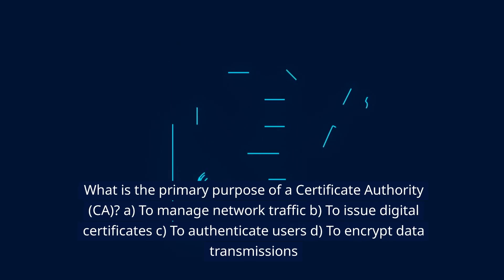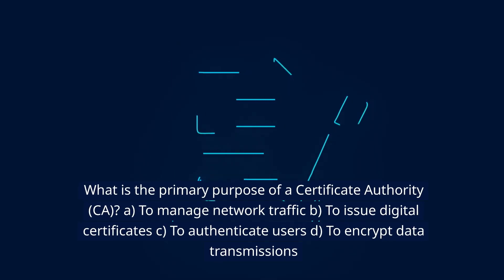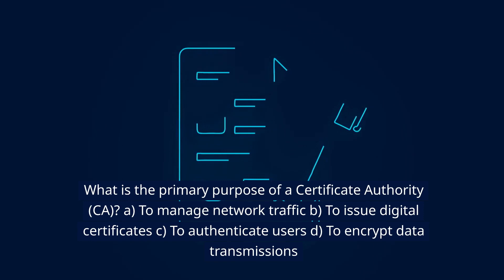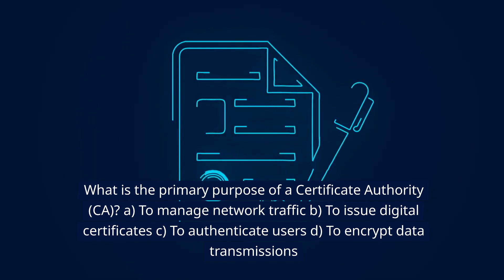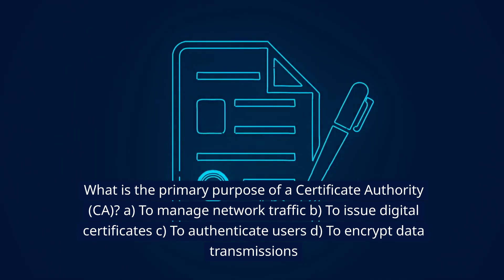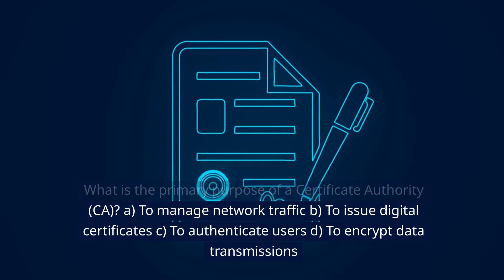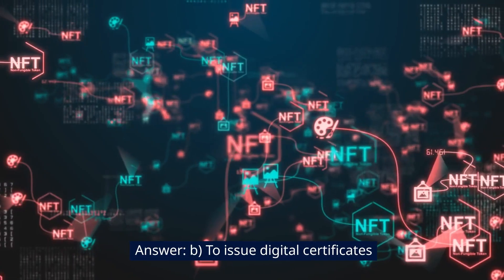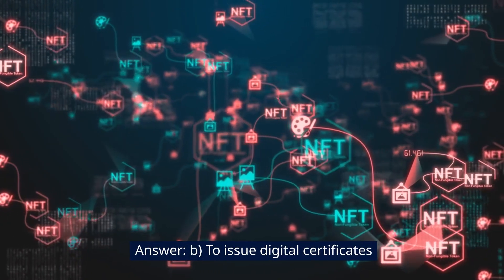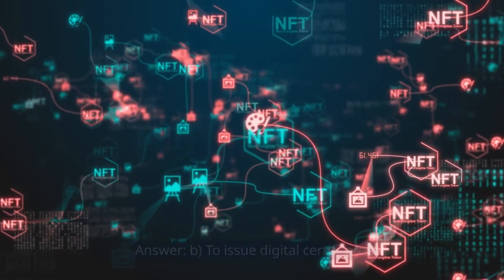What is the primary purpose of a certificate authority? A. To manage network traffic. B. To issue digital certificates. C. To authenticate users. D. To encrypt data transmissions. Answer: B. To issue digital certificates.